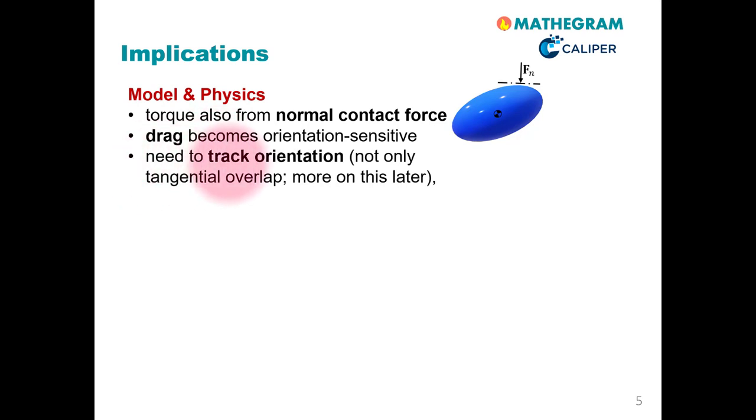Most obvious, we need to track the orientation of the particles. Of course, we have to note here that in the classical spherical DEM approach we only track tangential overlaps. Orientation of the spherical particles is not tracked. More on this later.